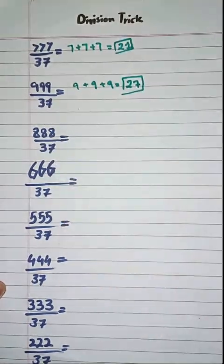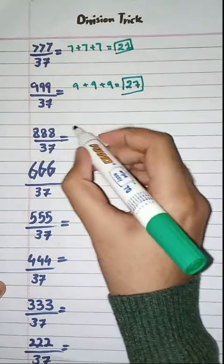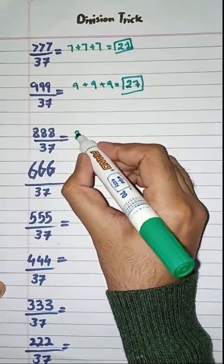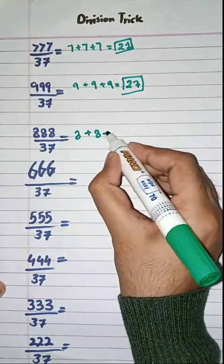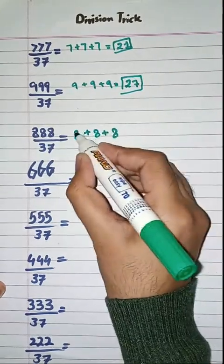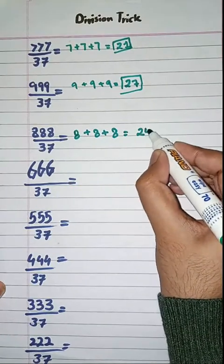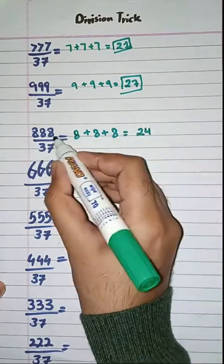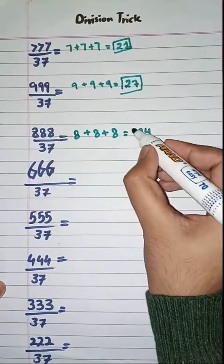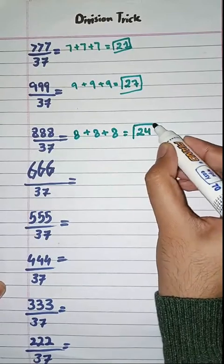Next one: 888 divided by 37. What we have to do? Add the digits of this number: 8 plus 8 plus 8, which is equal to 24. So 888 divided by 37 is equal to 24.